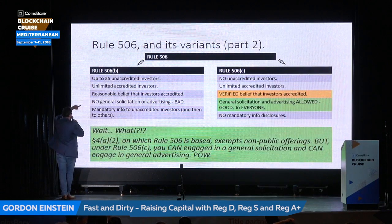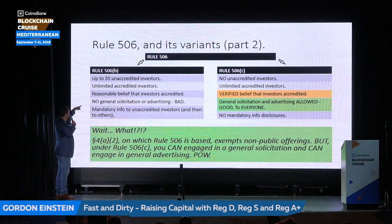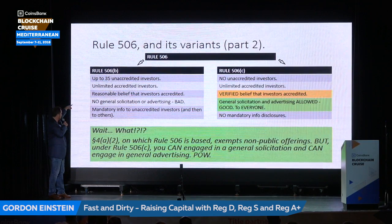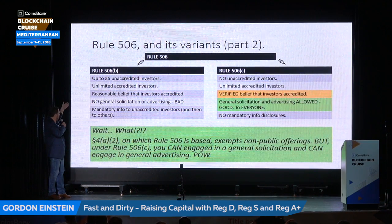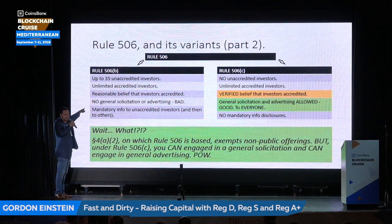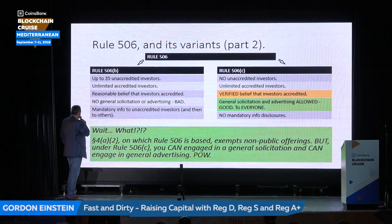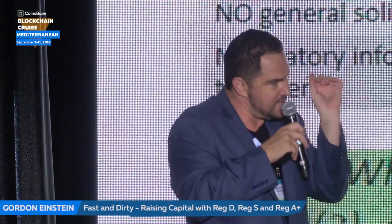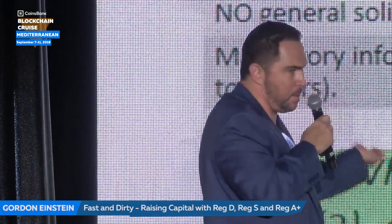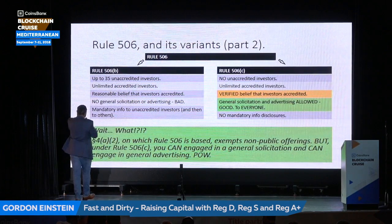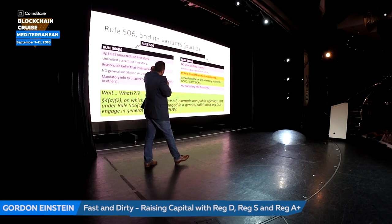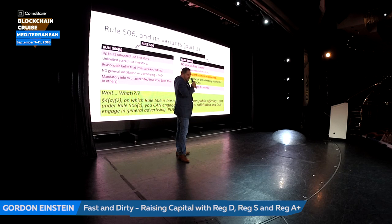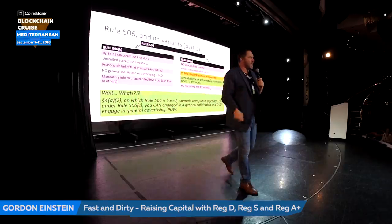Rule 506B allows unlimited accredited investors and up to 35 unaccredited investors. When it comes to them being accredited under 506B, you just have to have a reasonable belief that they're accredited. However, you may not advertise your offering to the public — no late night television, no website open to everyone. And if you have any unaccredited investors, you have to provide them with a long document explaining what you're doing — like a smaller version of a prospectus. I don't want to deal with this.